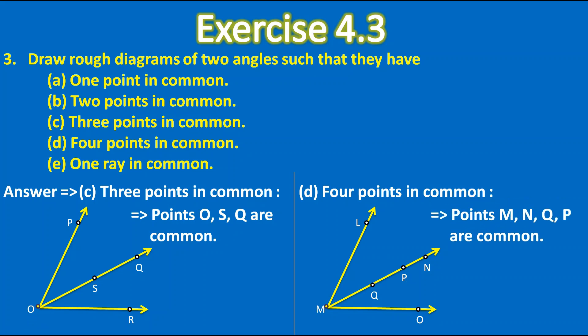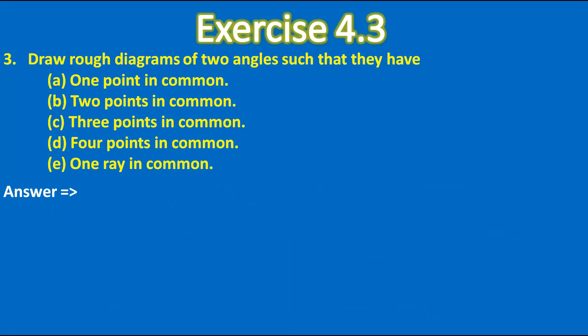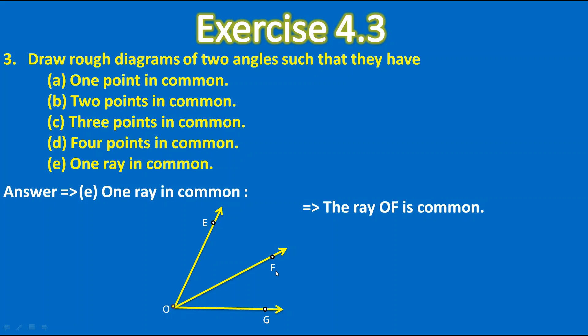For now next is one ray in common. So here one ray should be common. Here these are two angles. Here the ray common ray is O, F. So the ray OF is common. Here all three questions I solved from the exercise 4.3.